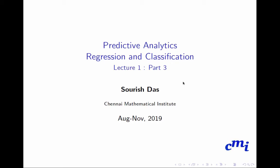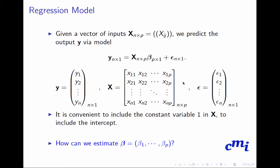Welcome to part 3 of lecture 1. Now we will consider given a vector of inputs x n cross p. This is the matrix representation of the simple multiple linear regression model. We want to predict the output y via this regression model in matrix notation.